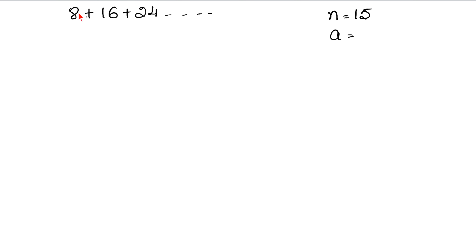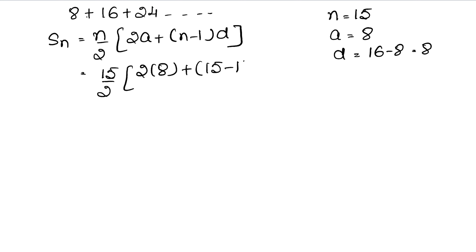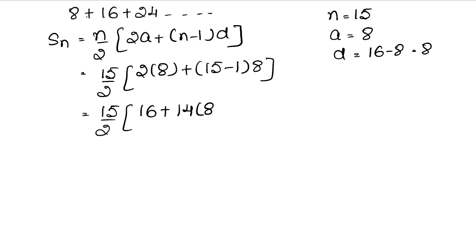Here a, the first number, is 8, and d is the second term minus the first term, that is 16 minus 8 = 8. So the sum formula is n/2 into (2a + (n−1)·d). Substituting: 15/2 into (2×8 + (15−1)×8) = 15/2 into (16 + 14×8) = 15/2 into (16 + 112).